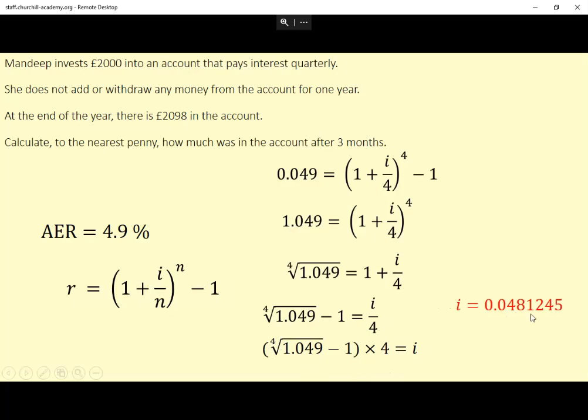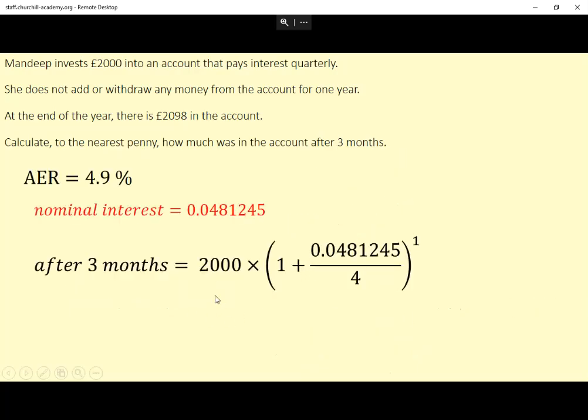We get that i is 0.0481245. Just so I don't lose any accuracy, I'm going to keep it that far, that many decimal places for the time being. It's almost certainly more than I need, but because I've got a calculator, it's not too hard to deal with that anyway.